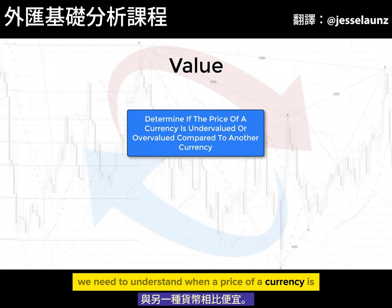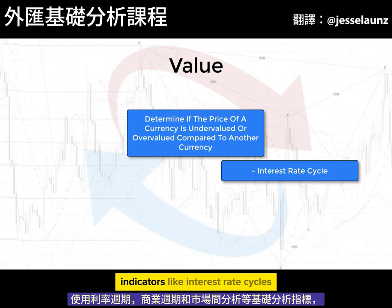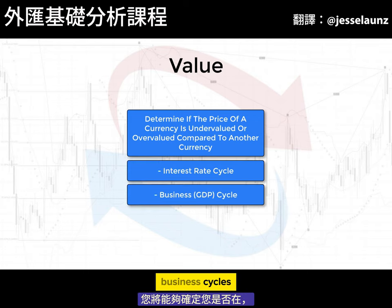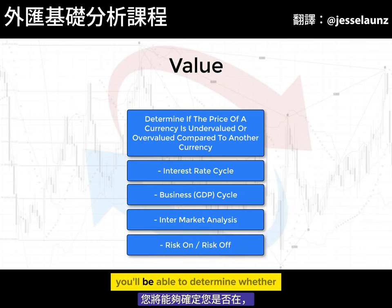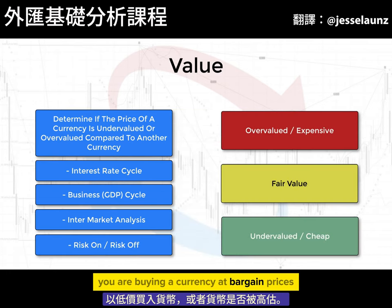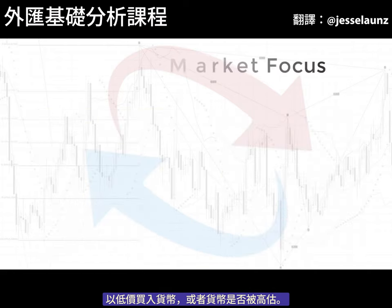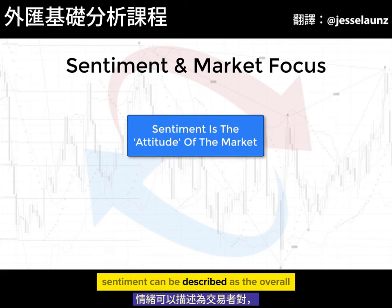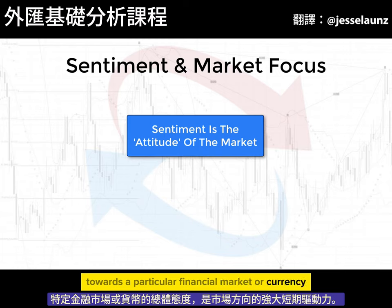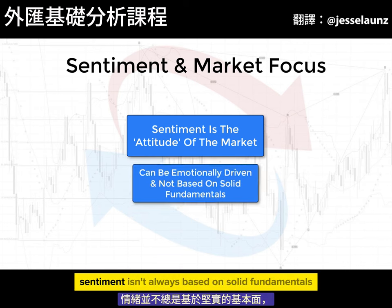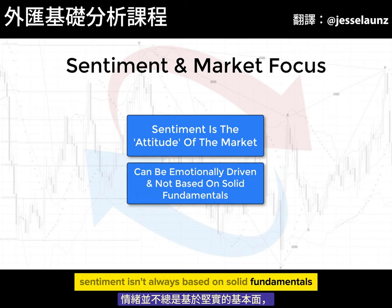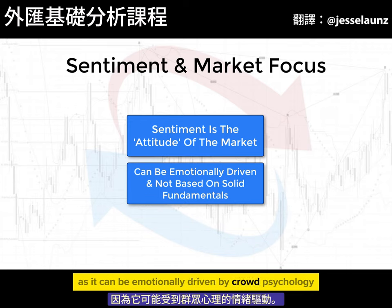The price of a currency may be undervalued or cheap compared to another. Using fundamental analysis indicators like interest rate cycles, business cycles, and intermarket analysis, you will be able to determine whether you are buying a currency at bargain prices or if a currency is overvalued. Sentiment can be described as the overall attitude of traders towards a particular financial market or currency, and is a powerful short-term driver of market direction. Sentiment isn't always based on solid fundamentals as it can be emotionally driven by crowd psychology.